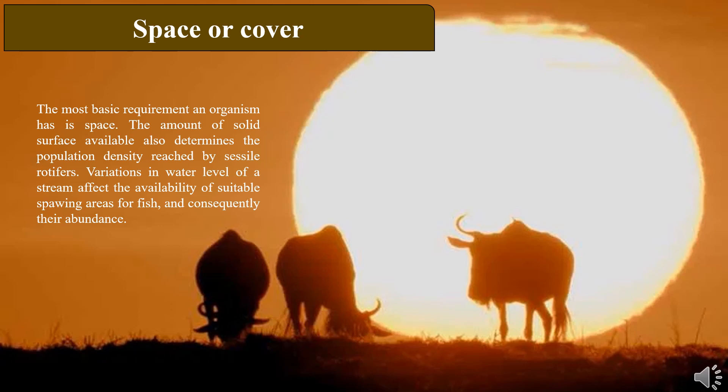The factors depend on different types. Let's discuss about space or cover. The most basic requirement an organism has is space. The amount of solid surface available also determines the population density reached by sessile rotifers. Variations in water level of a stream affect the availability of suitable spawning areas for fish and consequently their abundance.